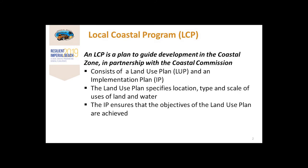A local coastal program is a plan to guide development in the coastal zone in partnership with the Coastal Commission. It consists of a land use plan, called an LUP, and an implementation plan, called an IP. The land use plan specifies the location, type, and scale of uses of land and water. The IP ensures that the objectives of the land use plan are achieved.